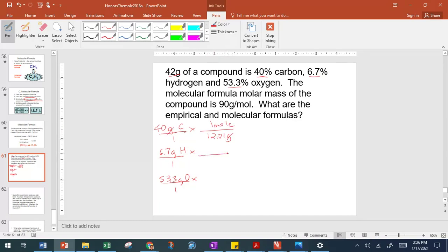So in the first case, we get 40 divided by 12.01. That gives us 3.3306 moles. Second case, we get 6.7 divided by 1.008. That gives us 6.6468 moles. In the last case, we get 53.3 divided by 16, and that gives us 3.3313 moles.